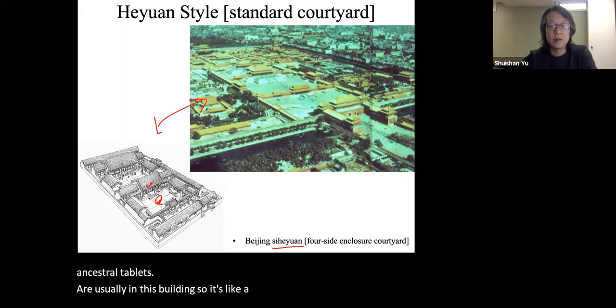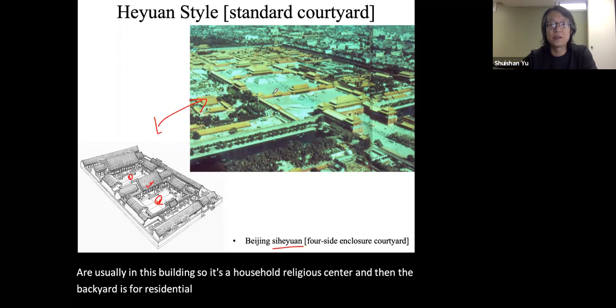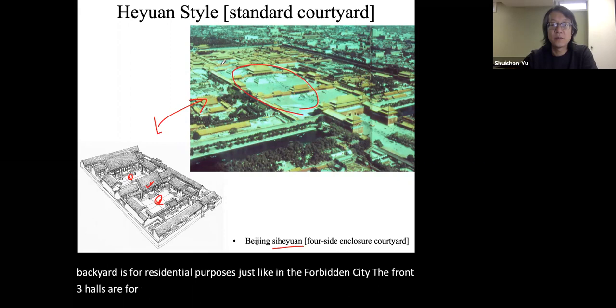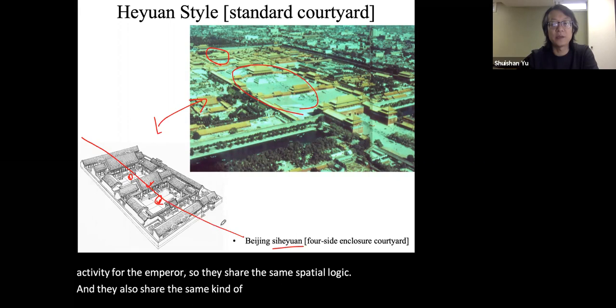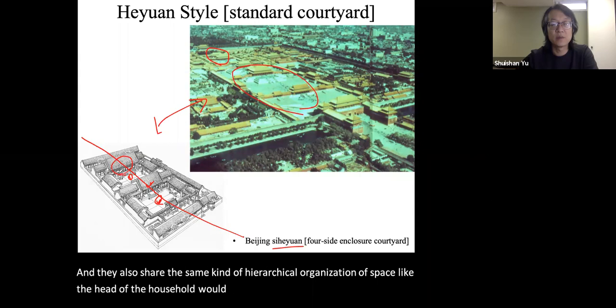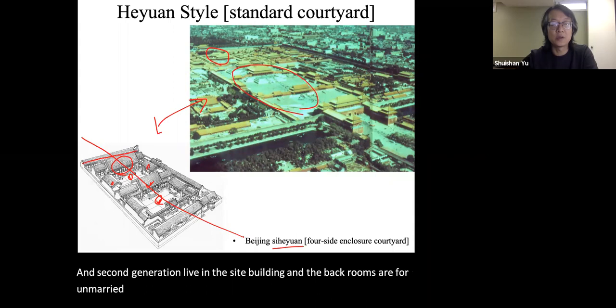The backyard is for residential purposes. Just like in the Forbidden City, where the front three halls are for court hearings and the rear three halls are for the emperor's residential activity, they share the same spatial logic and the same hierarchical organization of space. The head of the household lives in the main building, the second generation in the side buildings, and the back rooms are for unmarried women — daughters who live farthest from the entrance.